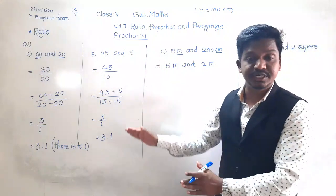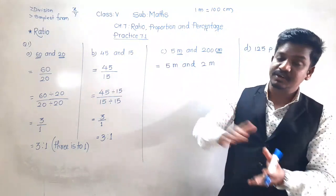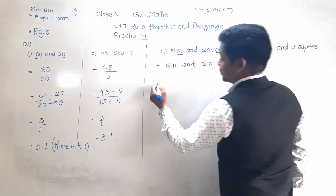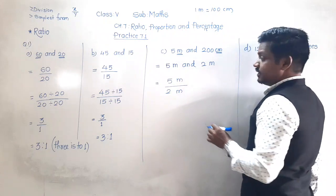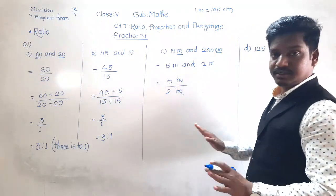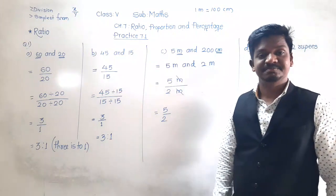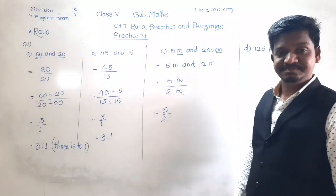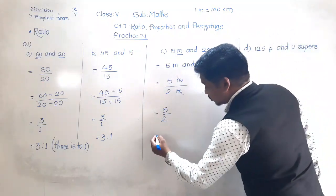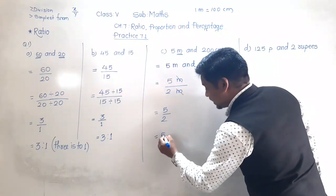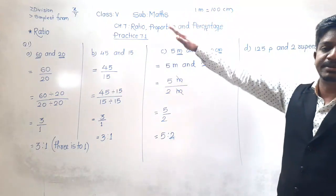If two numbers with different units are given, we cannot find ratio directly. We convert them into same unit and then find the ratio. Ratio is 5 meter upon 2 meter - meter divided by meter is cancelled. So we have 5 upon 2. Since 5 and 2 are both prime numbers, this is already the lowest term. So 5 is to 2 is the ratio of 5 meter and 200 centimeter.